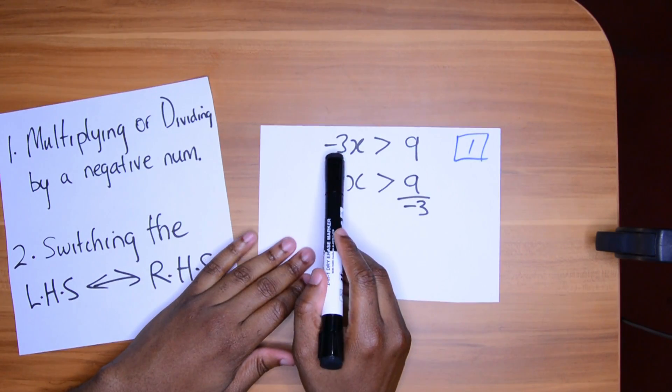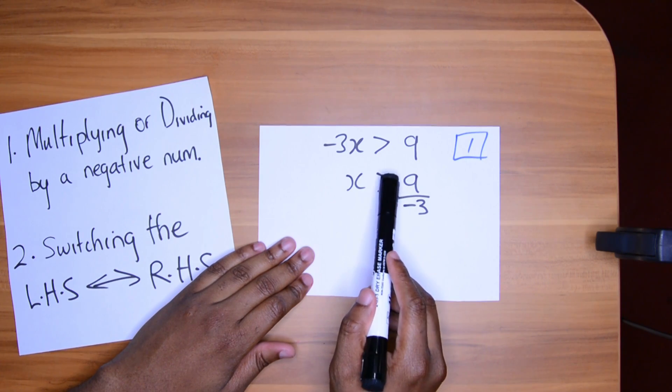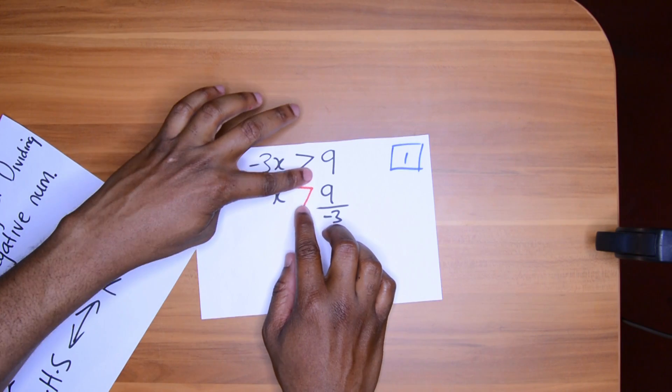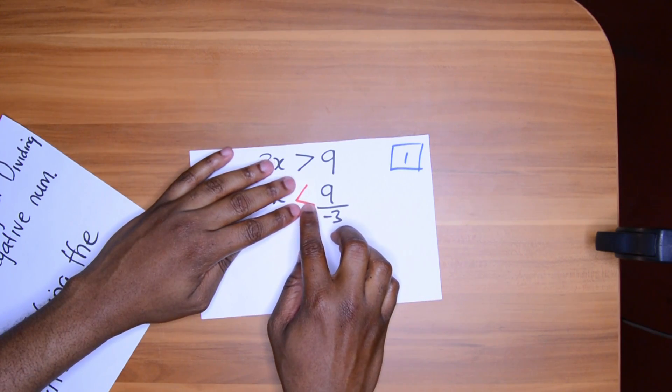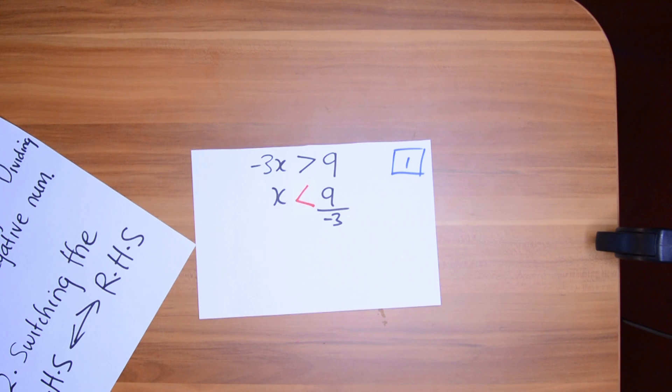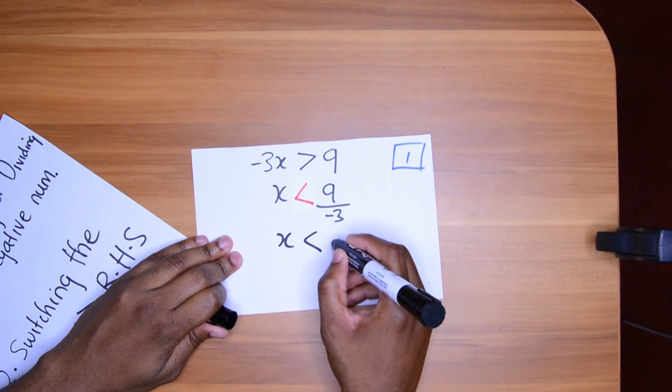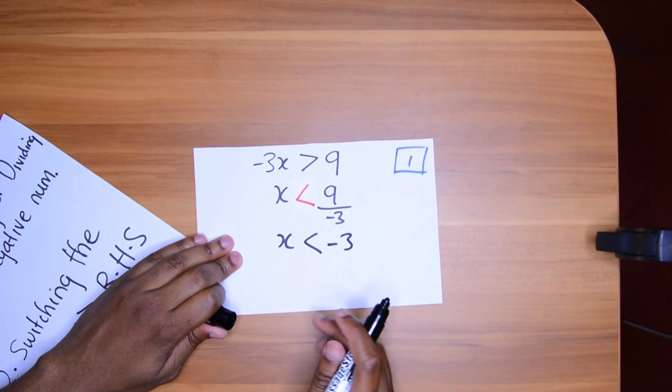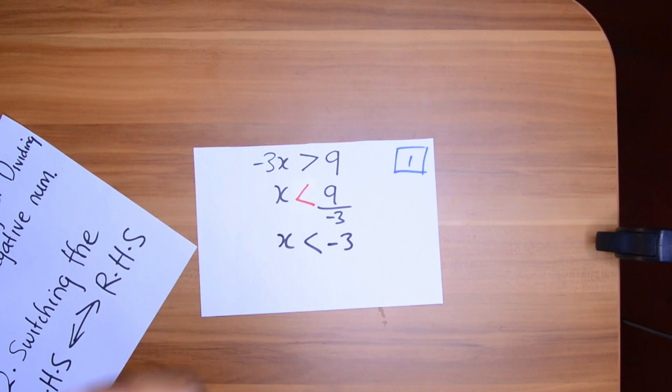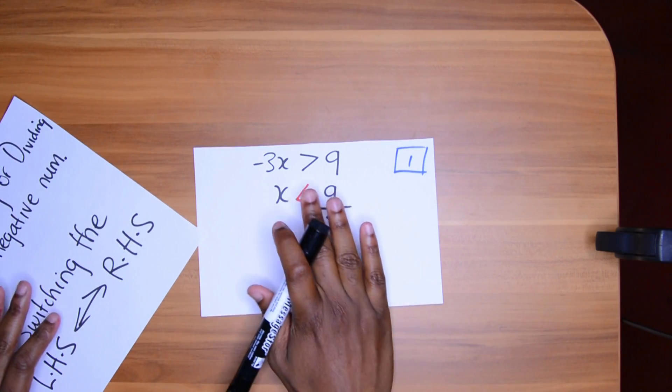Because anytime you divide by a negative number, the sign must switch. So instead of the sign facing this direction, because we divided by a negative number, it should face the other direction. If you multiply by a negative number, same thing. So the answer is going to be X is less than negative three. Nine divided by negative three is negative three. So anytime you divide or multiply by a negative number, remember to flip that sign. It's an easy mistake to forget. Even top students do it.